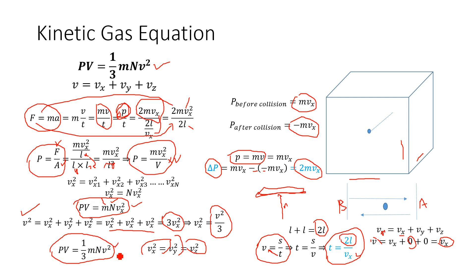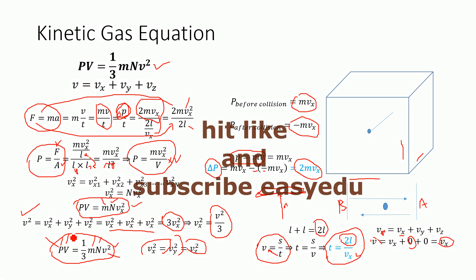So this is the kinetic gas equation. It relates pressure, volume, mass, number of particles, and root mean square velocity of the gas. If we know these microscopic properties, we can explain macroscopic properties like pressure and volume. That's it — thank you for watching, and don't forget to subscribe for more videos.